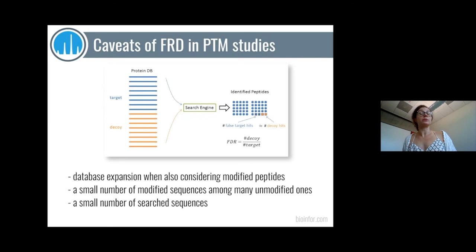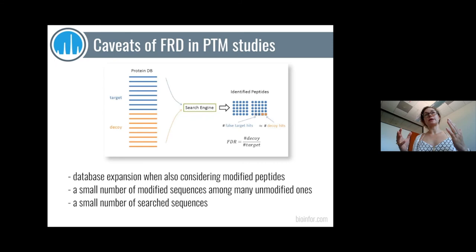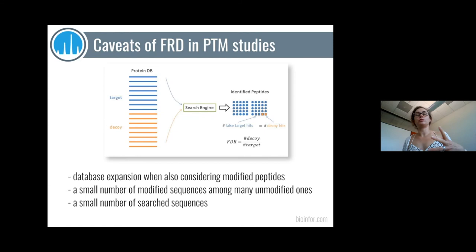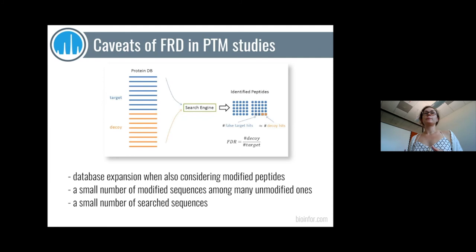Also, if you narrow your database too much — for example, studying PTMs on only one protein of interest and searching against just that single protein sequence — your database may not be large enough for the FDR process to work appropriately. Again, it's not the end of the world; go manually validate and do additional experiments. Be aware of situations where you have too few modified sequences, a database that is too small, or a database that is too large, as any of these can result in false positives instead of the modified sequences you're looking for.